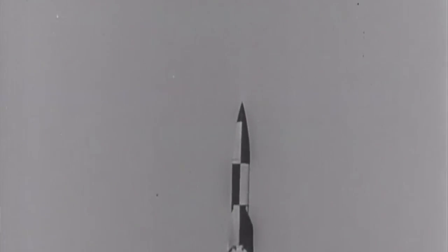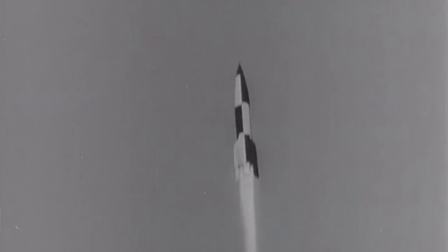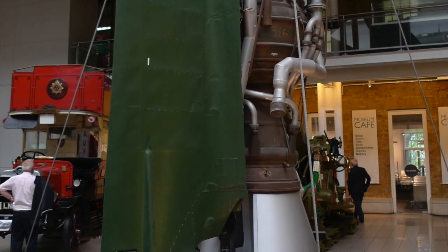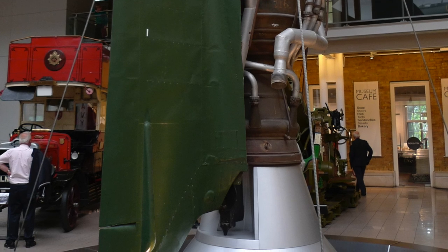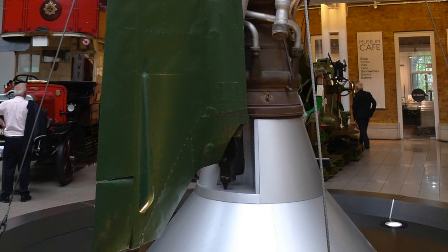At least three remaining examples of the missile were sent to the UK for further evaluation. When those evaluations were complete, those missiles were then sent to museums throughout the UK for display. The Imperial War Museum V2 that we're modeling here is one of those missiles.